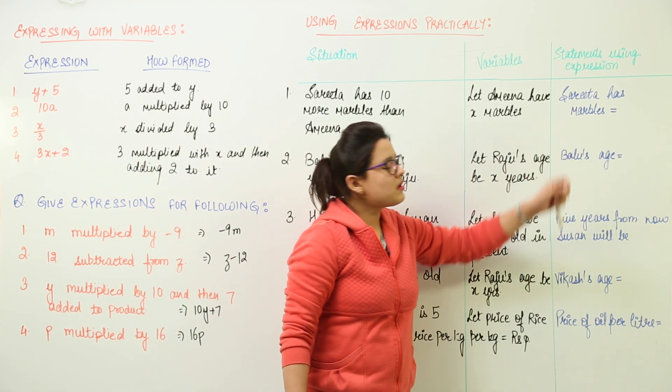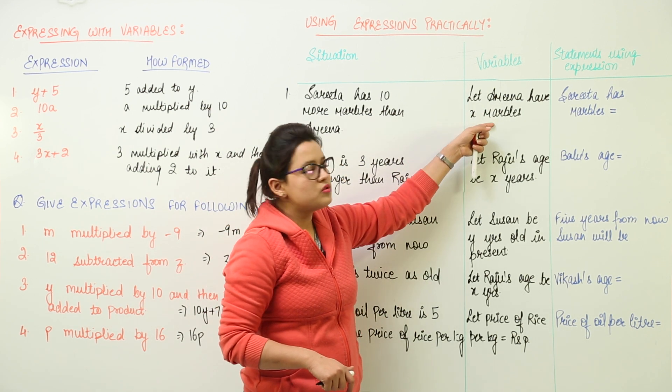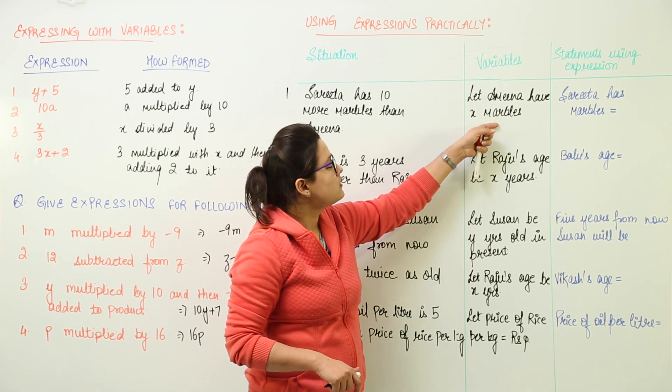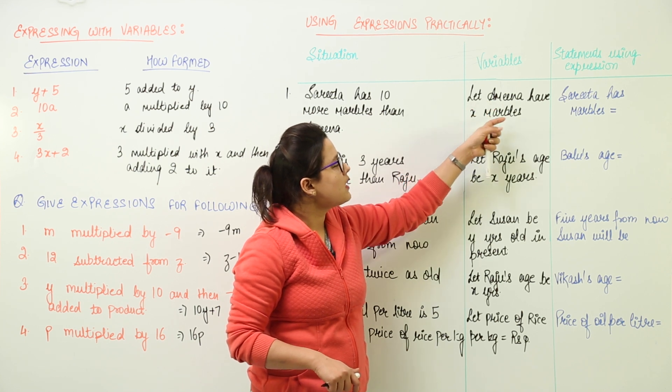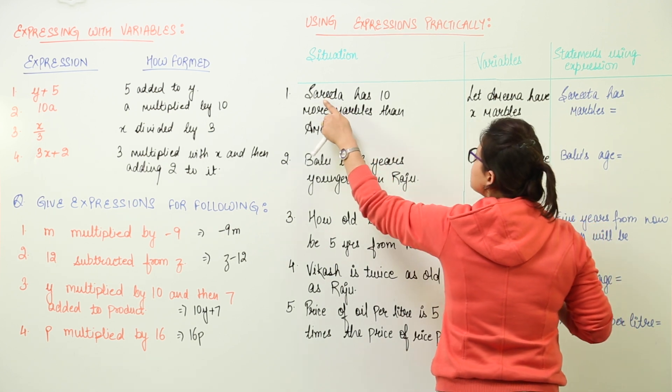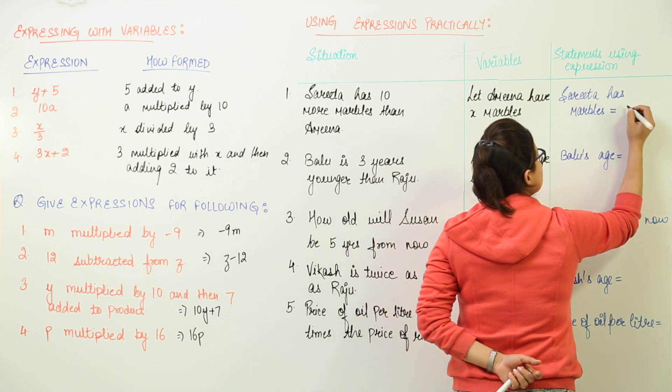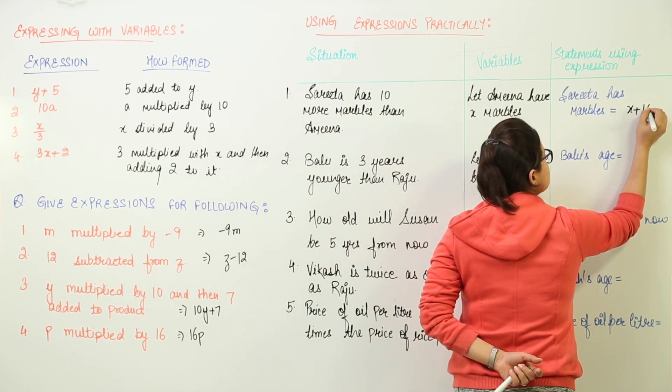We have to tell how many marbles does Sarita have. For that we have to assume the variables. Now here I am assuming that let Amina have x marbles. Now according to this if Amina has x marbles and Sarita has 10 more marbles than Amina, this means Sarita would have x plus 10.